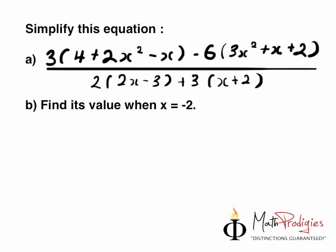The next question for the day is very simple. I want you to just do this. Simplify this equation: 3 bracket 4 plus 2x squared minus x bracket close bracket minus 6(3x squared plus x plus 2) over 2(2x minus 3) plus 3x plus 2. Okay, that's a whole mouthful. Find its value when x equals to minus 2. So A and B. Simplify the equation and then find its value when x equals minus 2. I know that this should be quite easy. I don't want you to do any careless mistakes. All I want you to do is to make sure that everything is slowly but surely simplified to a simple equation. Got it?